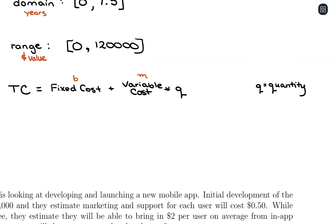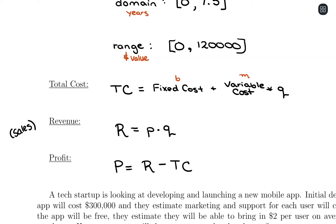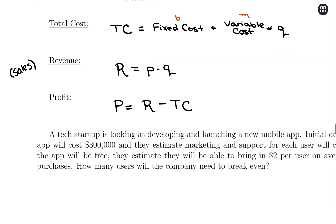Revenue uses another variable P for price. Revenue is the amount of money coming in — if you're selling some number of items for a certain price, multiply those together to get revenue. So R = P × Q. Profit comes from the difference between revenue and total costs: profit equals revenue minus total cost. Let's take a look at an actual application to see how it all comes together.